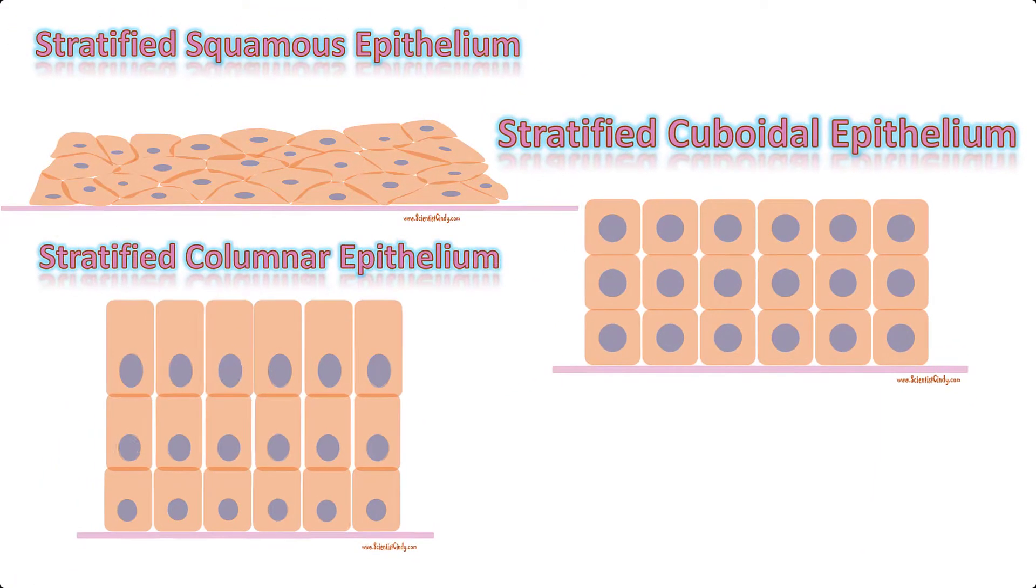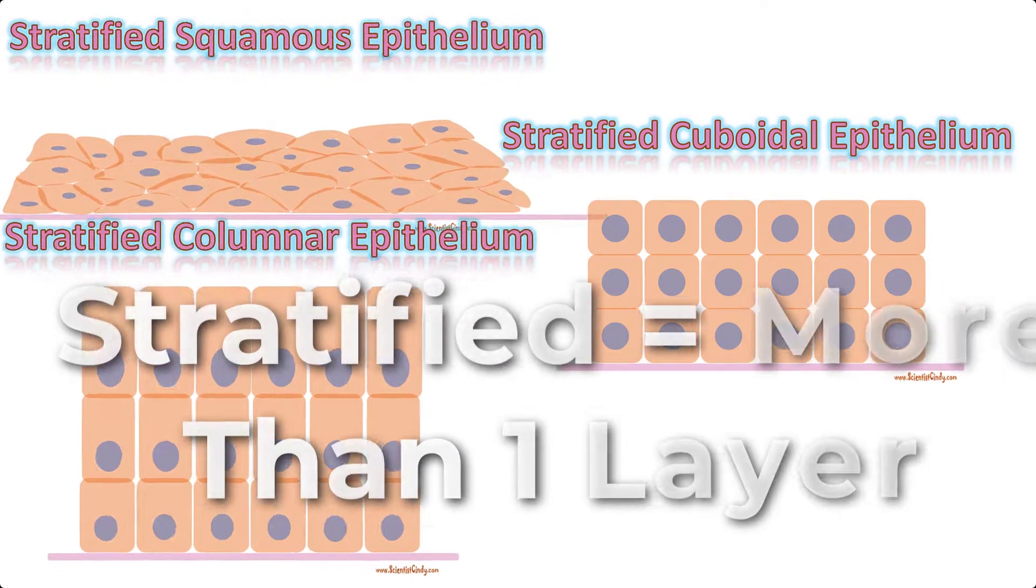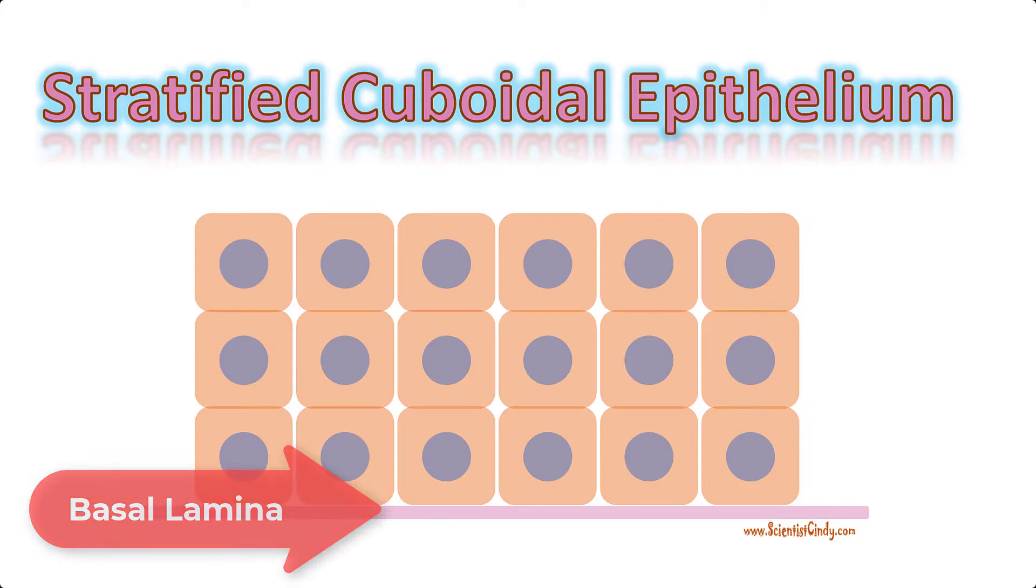When there is more than one layer of this tissue, we can refer to it as stratified epithelium. In stratified epithelium, only the basal layer of cells rests on the basal lamina.